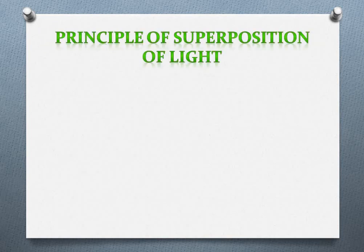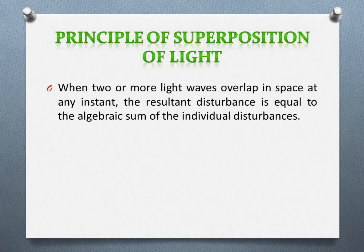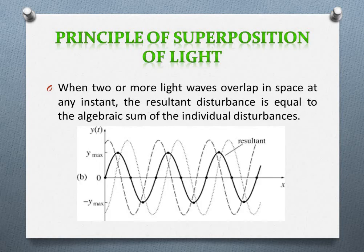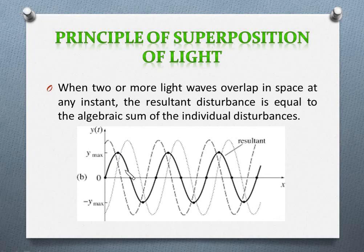Now, the principle of superposition of light states that when two or more light waves overlap in space at any instant, the resultant disturbance is equal to the algebraic sum of the individual disturbances. For example, if this is one wave and this is another wave, and these two waves meet at some point, then what we will see is the resultant disturbance — which is the algebraic sum of the two. So we actually observe the resultant wave.